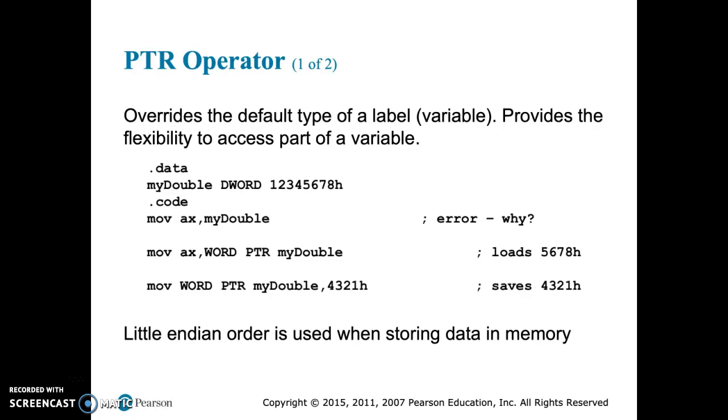So moving myDouble, which is a DWORD, into AX, which is a WORD, 32-bit into 16-bit causes an error. So the PTR operator allows us to essentially resize one of the two labels so that the two memory sizes are the same.